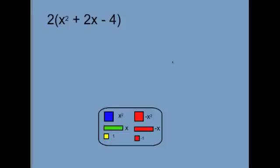Next we'll get into distribution. We start with 2 times x squared plus 2x minus 4. Now when we do this, we want to start by modeling what's on the inside. We have x squared, 2x, and minus 4.